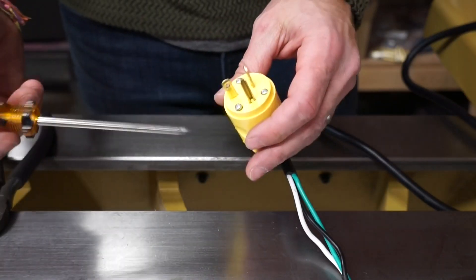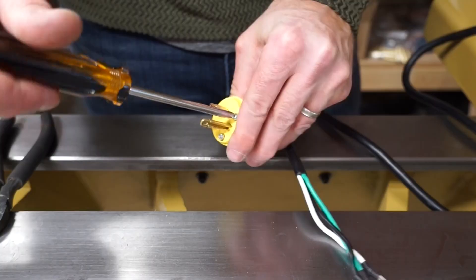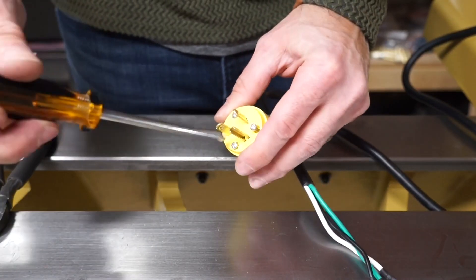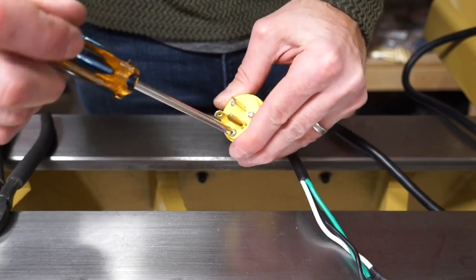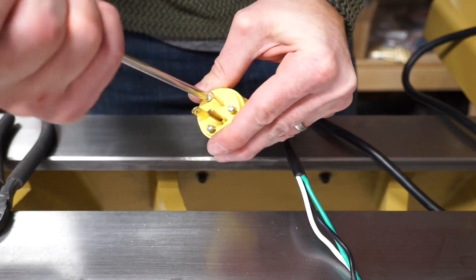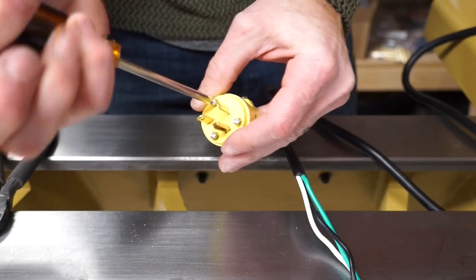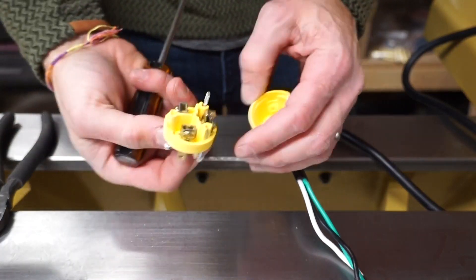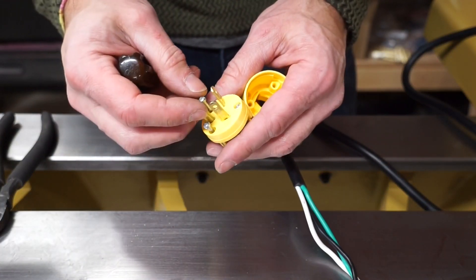Alright, first thing I'm going to do is loosen the three Phillips head screws on the front of this male connector here. That's going to allow me to pull this plate off to expose the electrical connections.